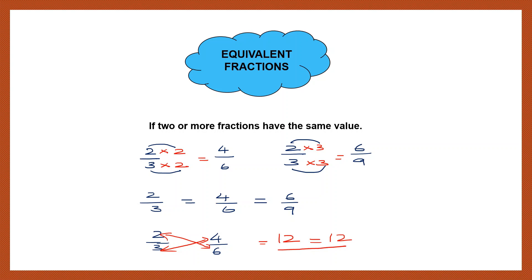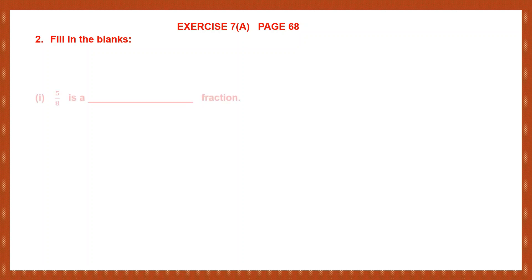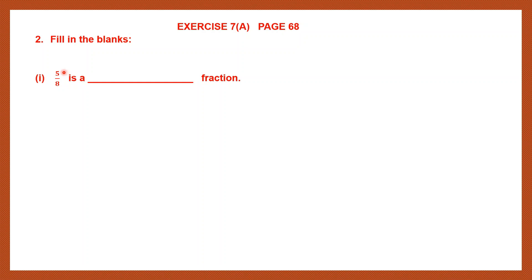Based on this, let's do question 2 of exercise 7a. We are doing only question 2 because this is about the types of fractions we just learned. Question 2, fill in the blanks. First one: 5 by 8. Can you look at the fraction 5 by 8? You can see that the numerator 5 is smaller than the denominator 8, so this is a proper fraction. 5 by 8 is a proper fraction.